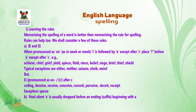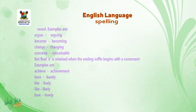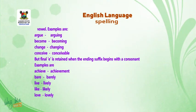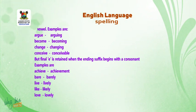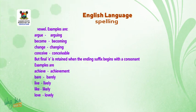Final silent E is usually dropped before an ending suffix beginning with a vowel. Examples are: argue — arguing, become — becoming, change — changing, conceive — conceivable. Final E is retained when the ending suffix begins with a consonant.